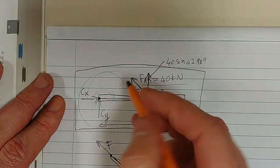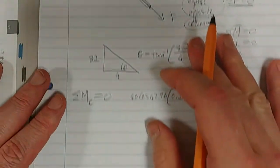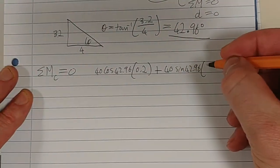This vertical component will also cause an anticlockwise moment. So that's plus 40 sin 42.96. And that distance, if you look, was 4. That length there is 4. So that is times 4.